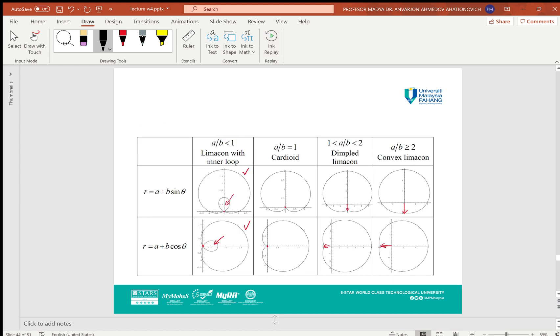You can see here different pictures for different ratio values. If a/b < 1, the picture will have an internal part which is called an inner loop. If a = b, it will be like a heart position, and that edge of the heart will be at the pole.